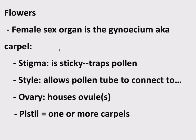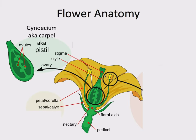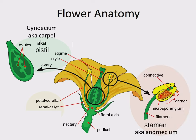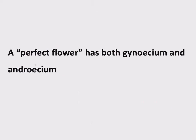To summarize: the female sex organ is the gynoecium, also called the carpel. The stigma is sticky and traps pollen; the style allows the pollen tube to connect to the ovary, which houses the ovule or ovules — one or multiple depending on the species. Technically, the pistil refers to all the carpels within a flower, so the pistil is one or more carpels. In this particular example we have both the gynoecium and the androecium within a single flower.